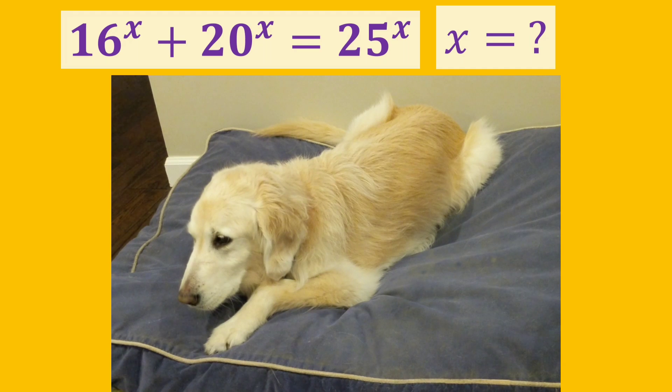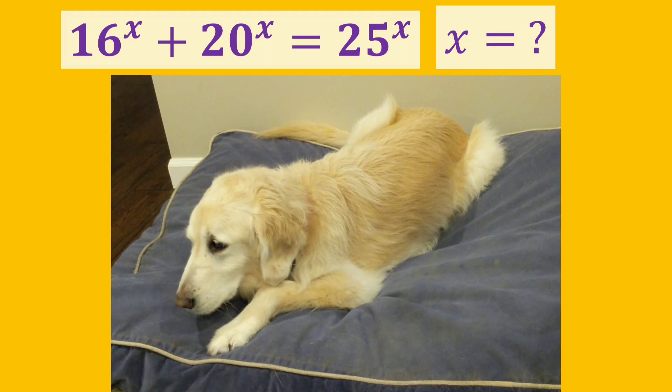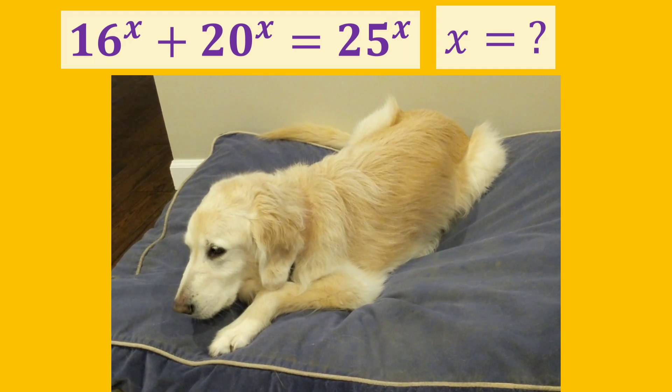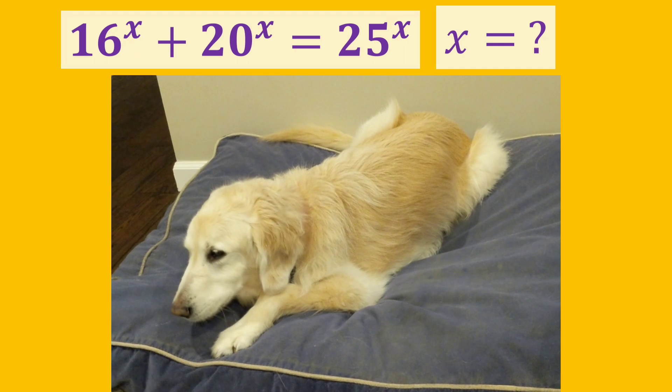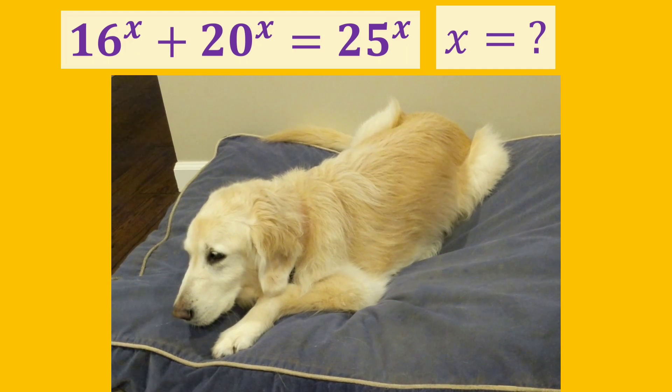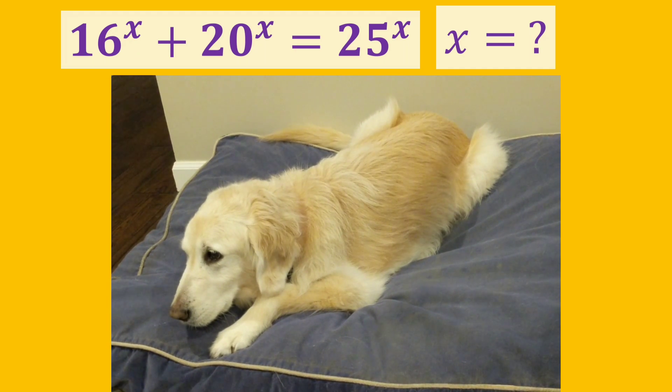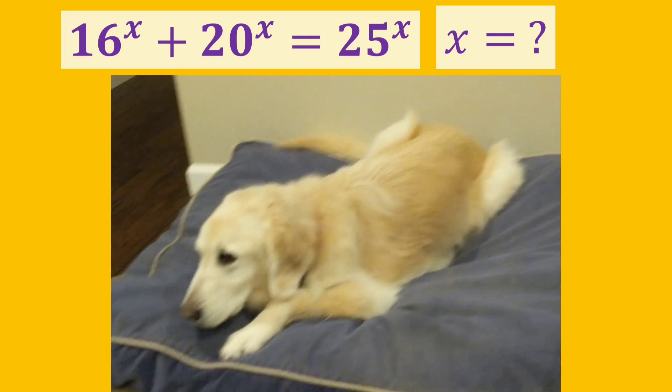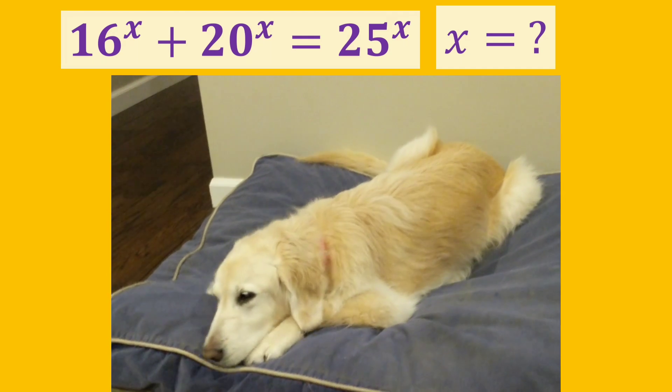Hi, guys. I hope you are all doing well. Today we have a beautiful exponential equation: 16 to the power of x plus 20 to the power of x is equal to 25 to the power of x. Let's start to solve it.